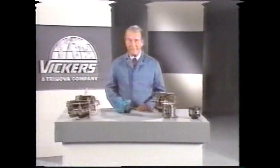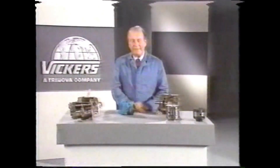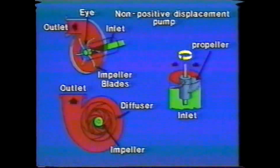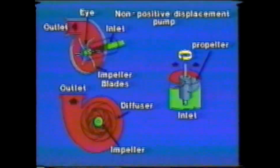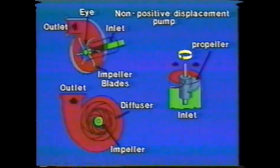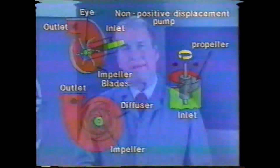Pumps fall into two basic categories: positive displacement and non-positive. Non-positive pumps are used primarily for circulating or transferring fluids. Examples would be the water pump on an automobile engine or one used in a dishwasher or washing machine. Most non-positive pumps operate by centrifugal force. Fluids entering the center of the pump housing are thrown to the outside by means of a rapidly driven impeller. There is no positive seal between the inlet and the outlet ports, so the pressure obtained is a function of the drive speed. The output flow decreases as the resistance increases.